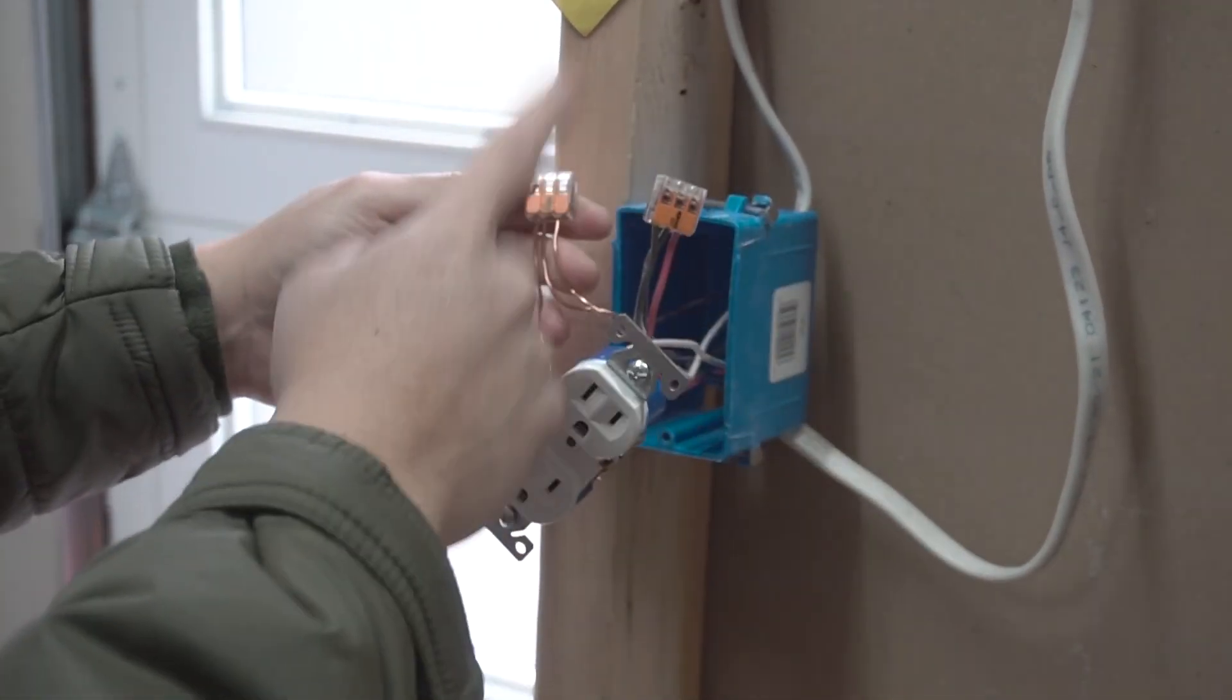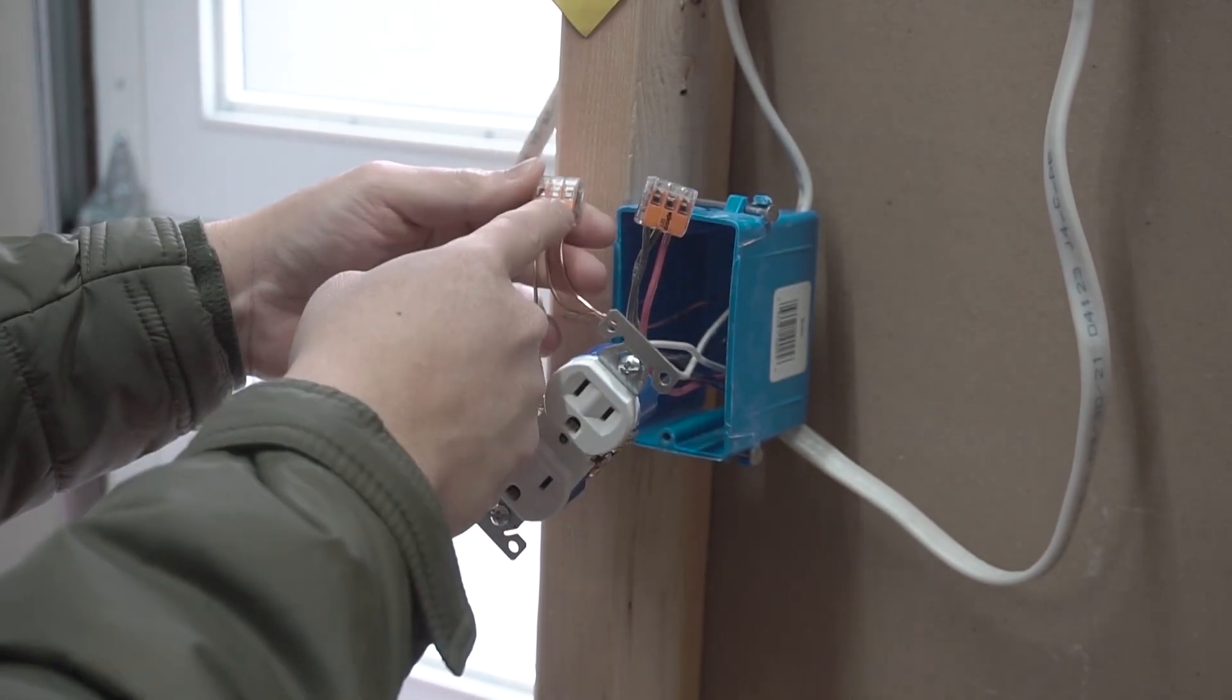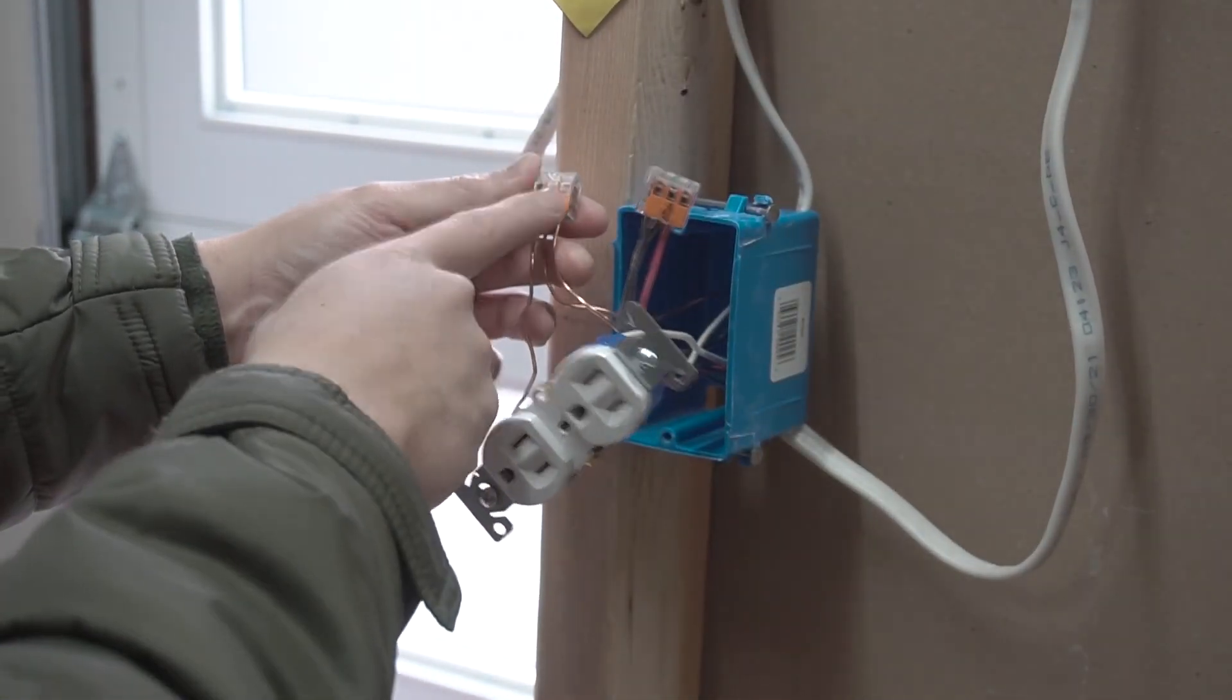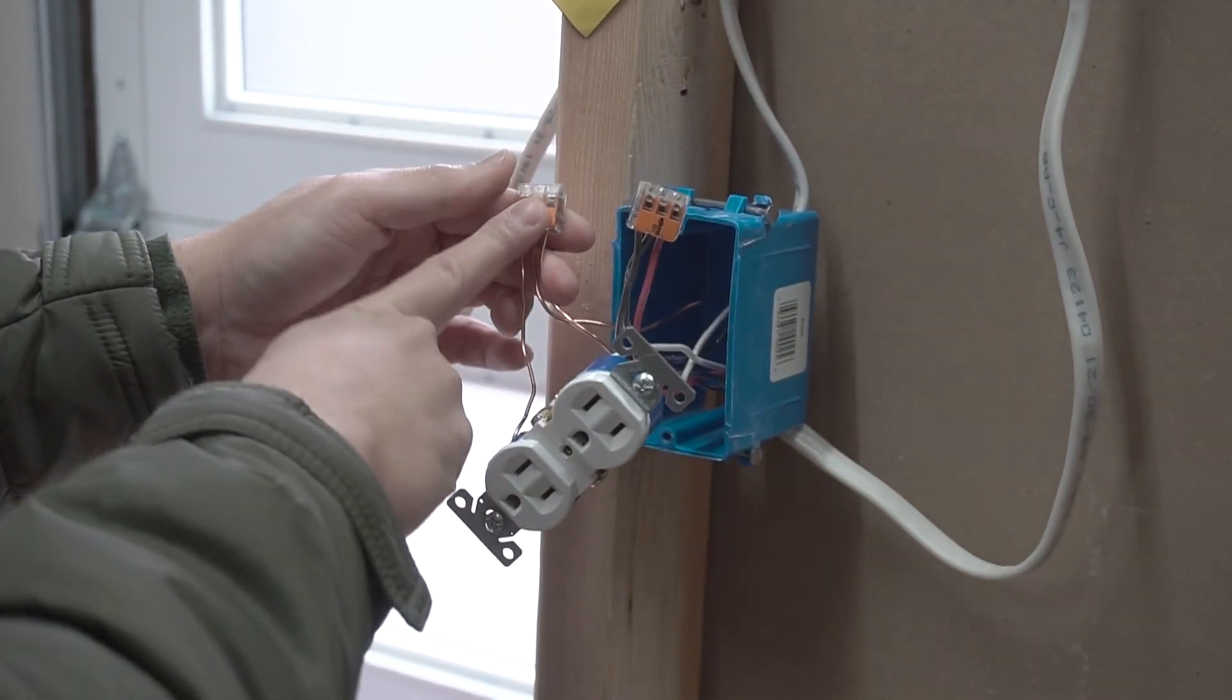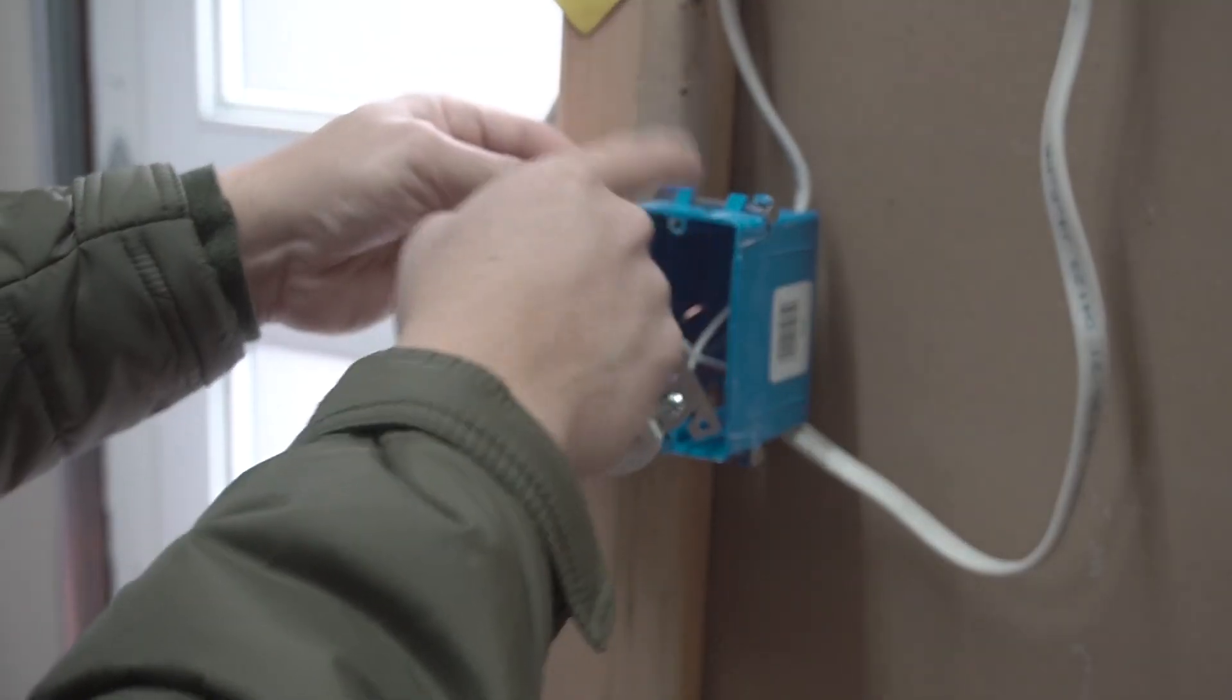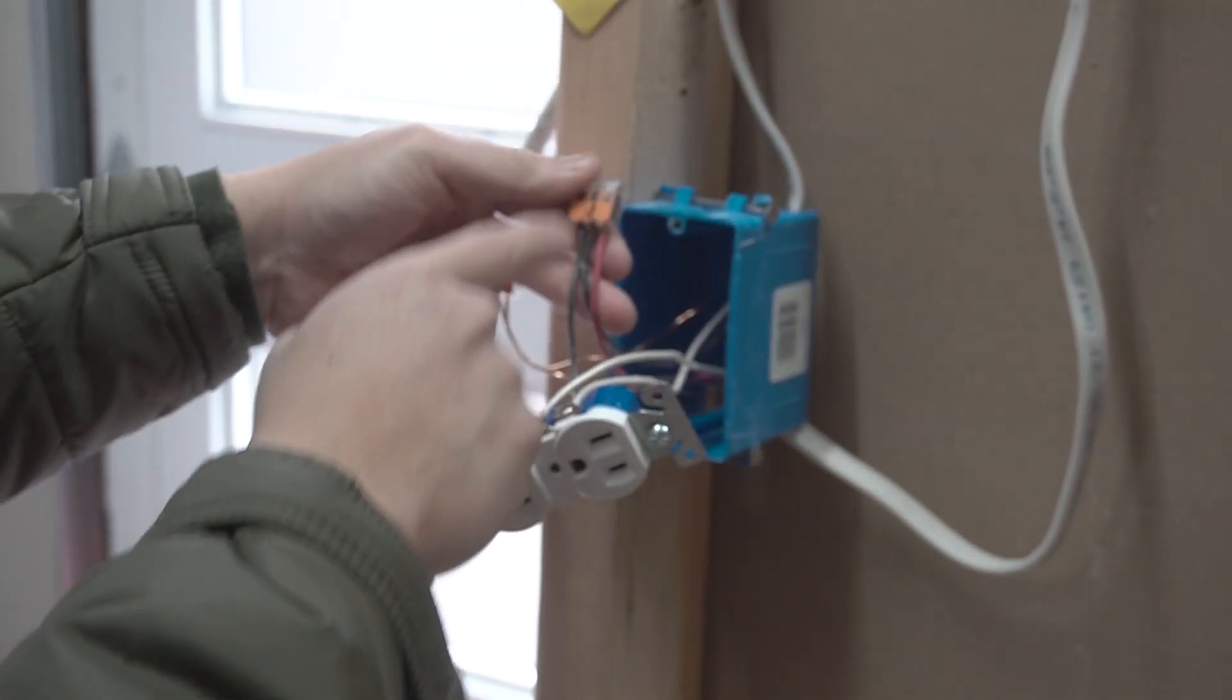Now we connected a pigtail onto the top hot screw terminal and then we connected another pigtail onto the ground terminal. Now let's start with the ground first. The ground from our 14-2 power source, the ground from our outlet, and the ground from our 14-3 is all fed into the same connector.